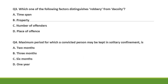Question number three: Which one of the following factors distinguishes robbery and dacoity? Option A: time span, option B: property, option C: number of offenders, option D: place of offense. This is very important and very easy. Which factor distinguishes robbery and dacoity? Option C is the correct one — number of offenders. In dacoity, when five or more persons jointly commit or attempt to commit a robbery.